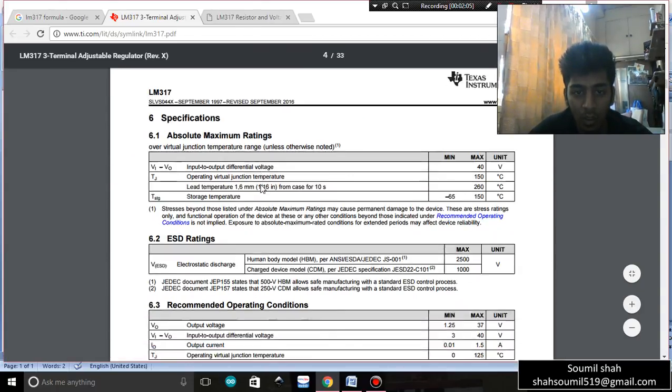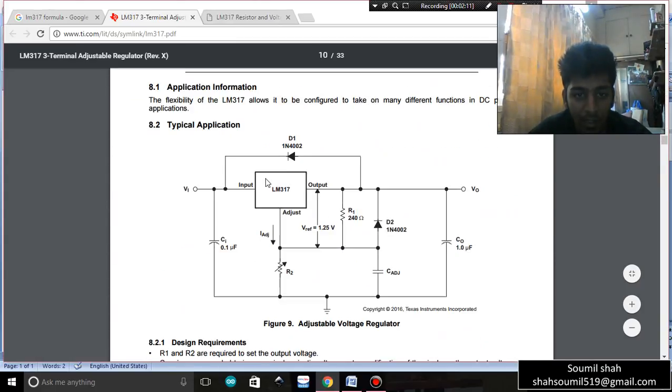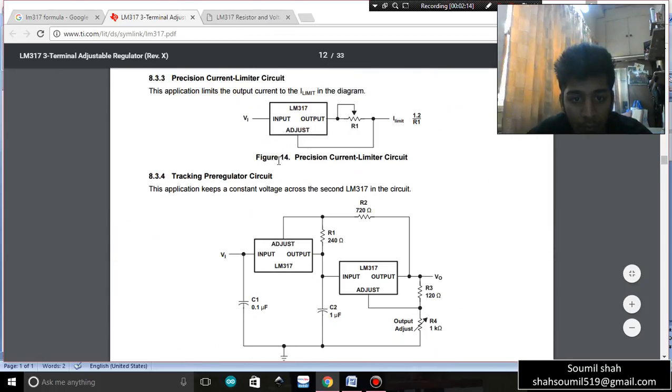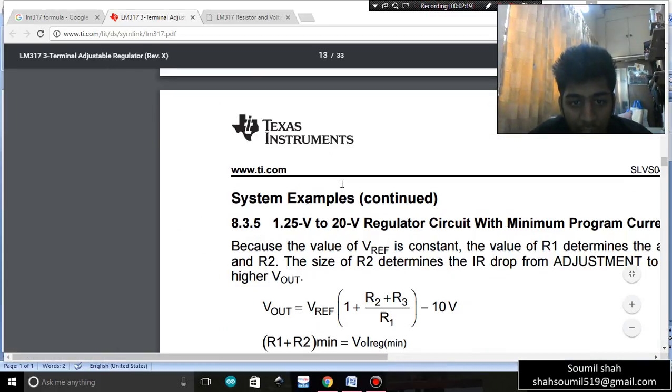Now at the bottom of the datasheet we have a circuit diagram for variable power supply. I'm just going to show you that. So here you can see this circuit diagram right here.